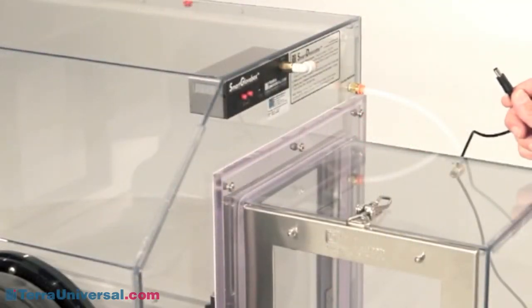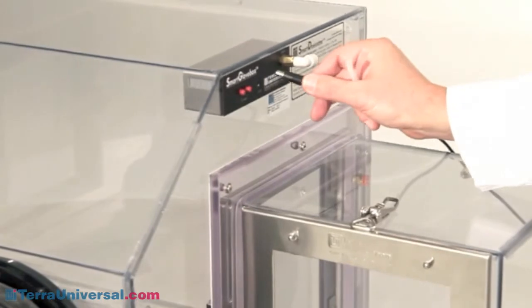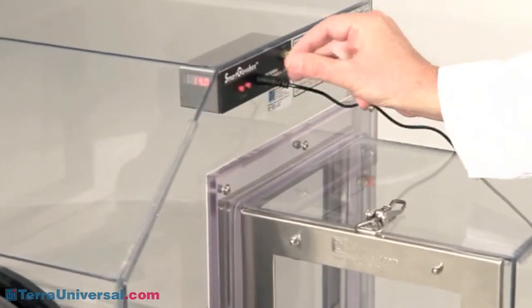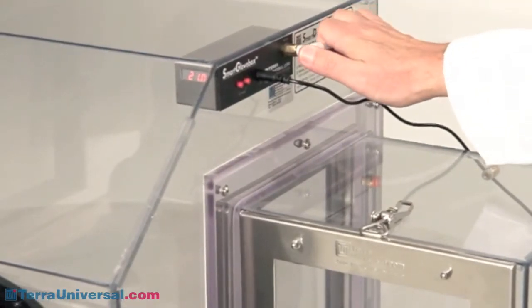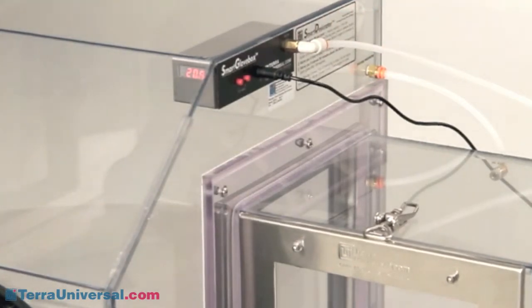The smart control system is easy to set up and program. The system requires a 12 volt power supply and comes with a switching 120 volt 220 volt transformer. You connect the quarter inch compressed nitrogen line here. Incoming nitrogen should be externally regulated at no more than 15 psi.